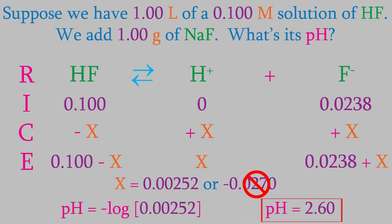Let's think about that answer for a minute. Before we added the sodium fluoride, the solution had a pH of 2.10, and now it has a higher pH of 2.60. Remember, a higher pH means the solution is more basic, and that makes sense because Le Chatelier's Principle tells us that adding fluoride should shift the reaction to the left, away from the hydrogen ions.